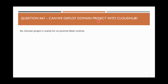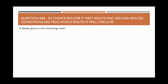The next question: in a choice router, if the first route and second route conditions are both true, which route will it execute? In a choice router, you can specify 'when' conditions and you can have many routes.